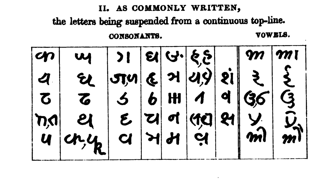Kaithi, also called Kaathi or Kaasthi, is a historical script used widely in parts of North India, primarily in the former Awadh and Bihar. It was used for writing legal, administrative, and private records.